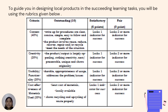To guide you in designing local products in the succeeding learning tasks, you will be using the rubrics given. The criteria are: content at 40%, creativity at 20%, usability or functionality at 20%, and cost-effectiveness of materials used at 20%. You will be graded as outstanding, satisfactory, and fair.